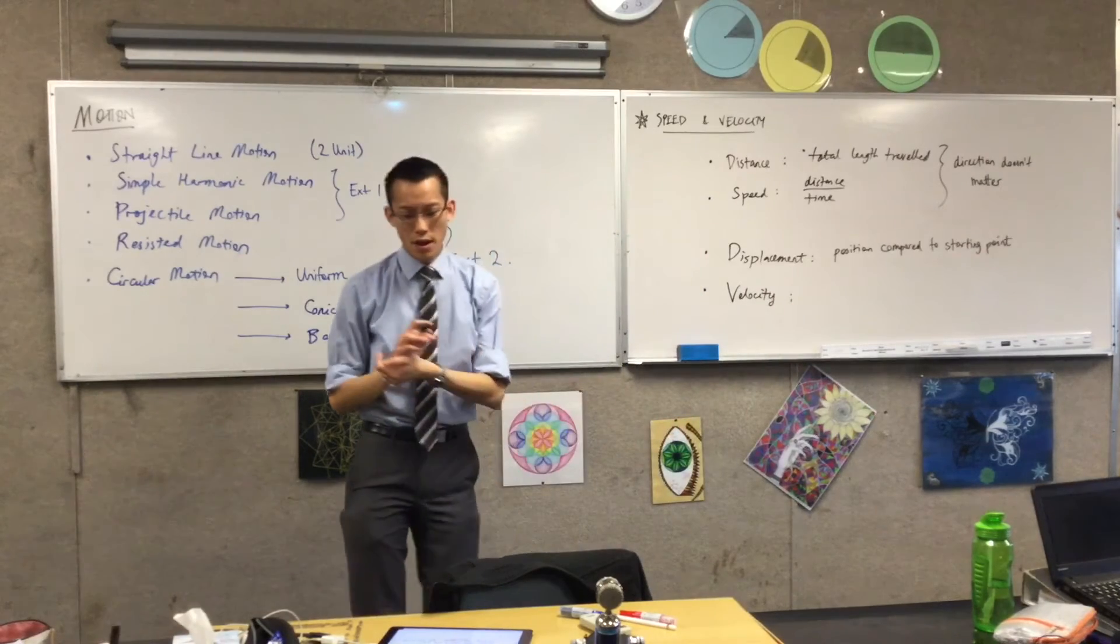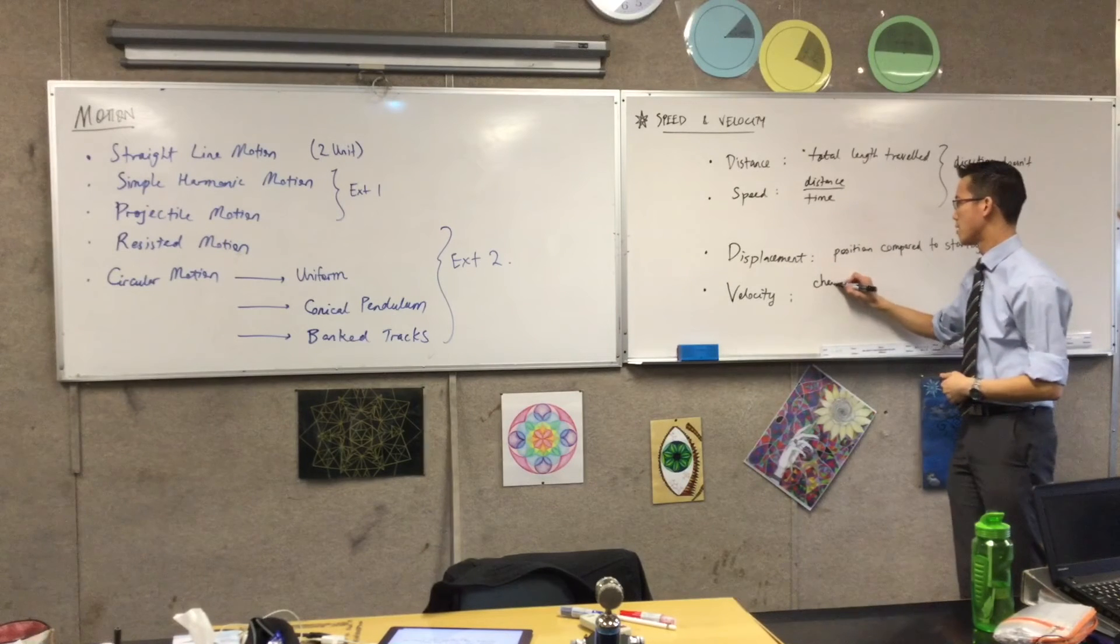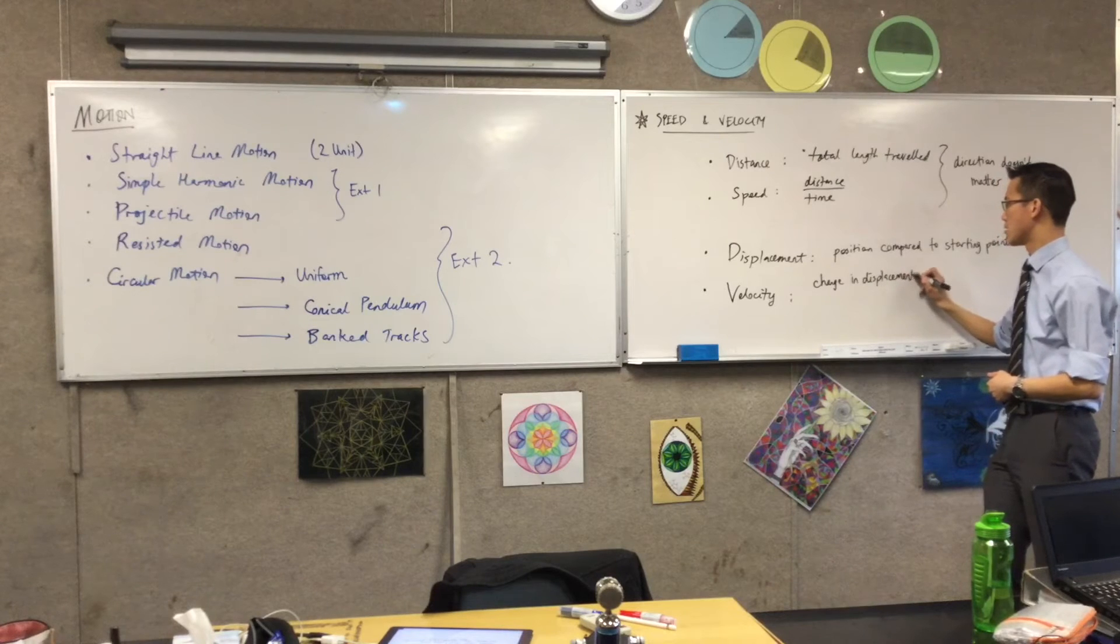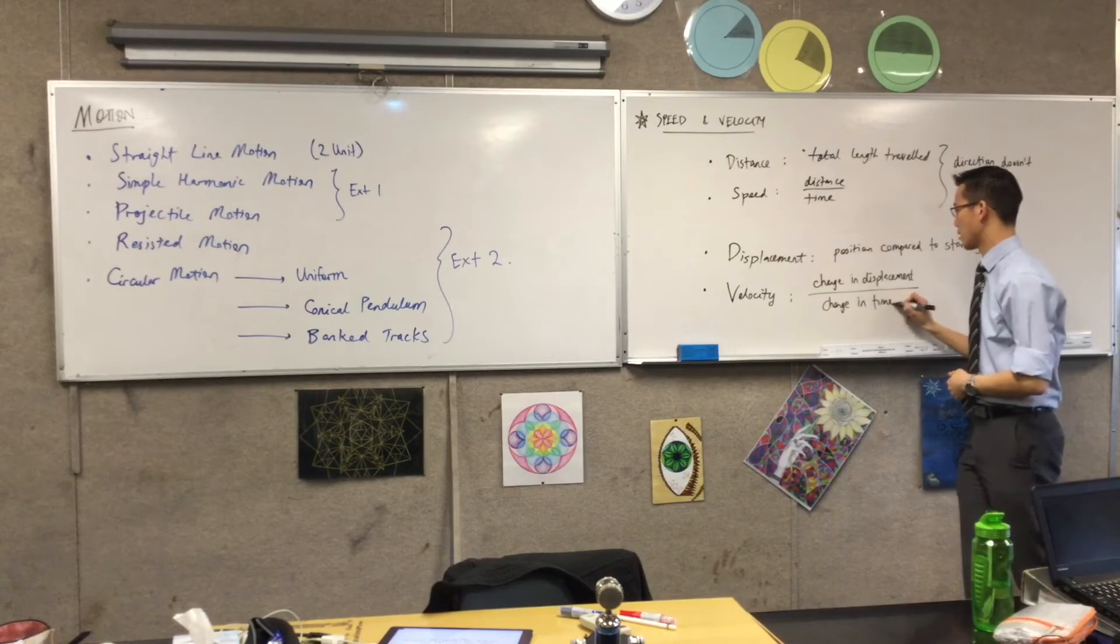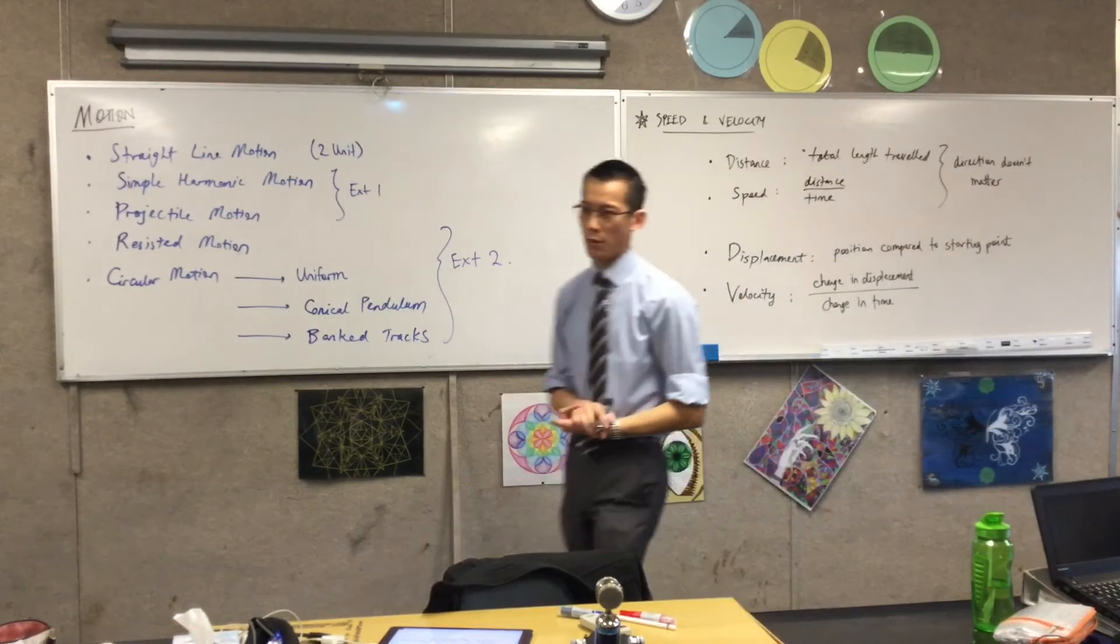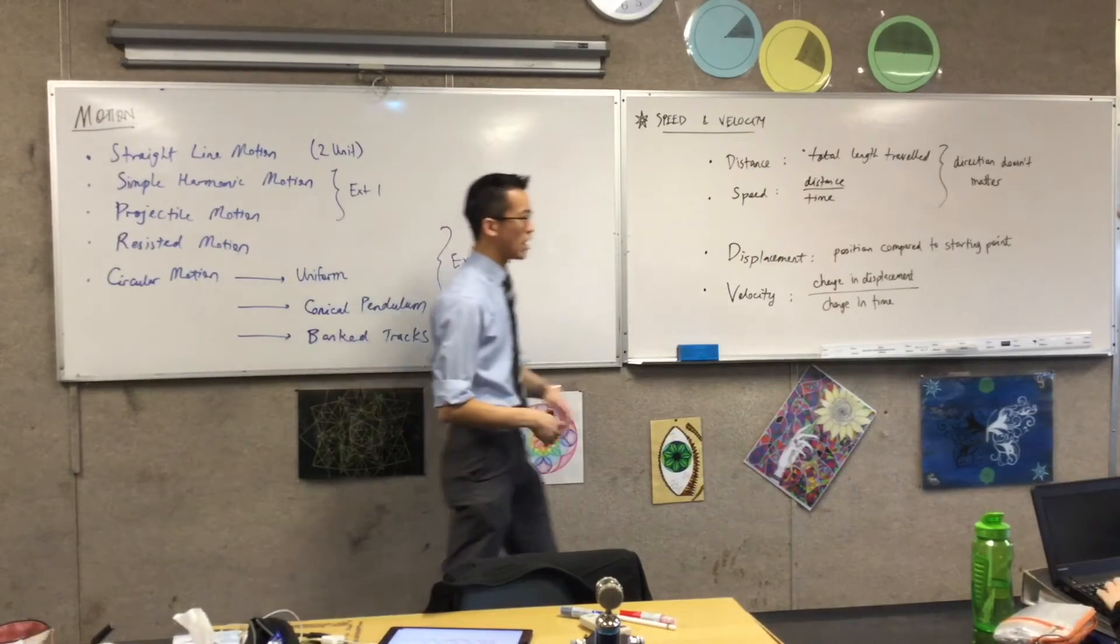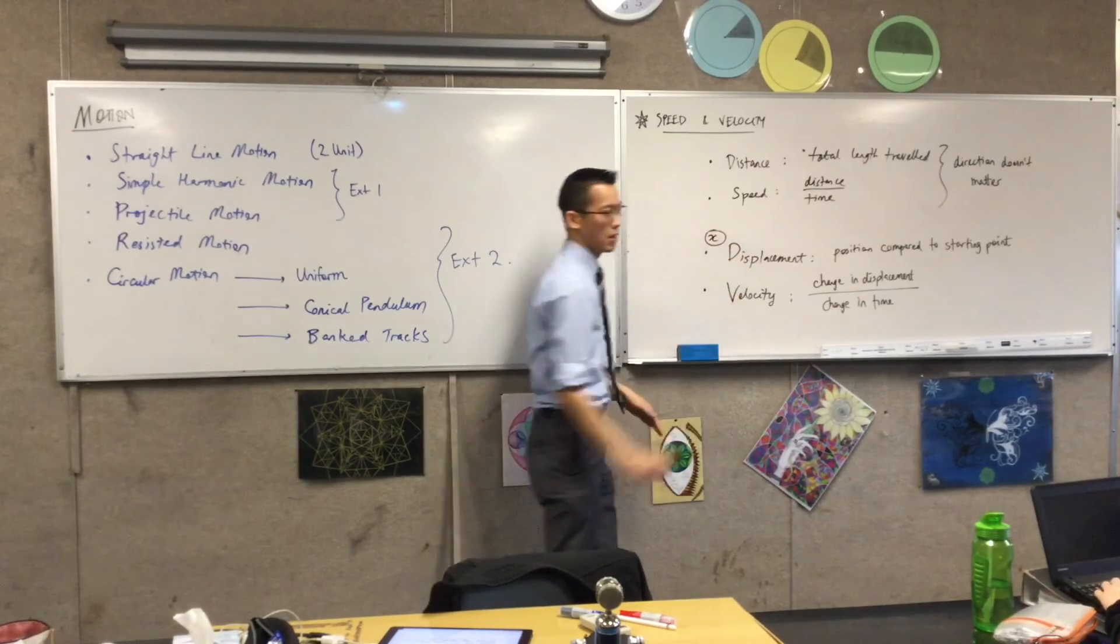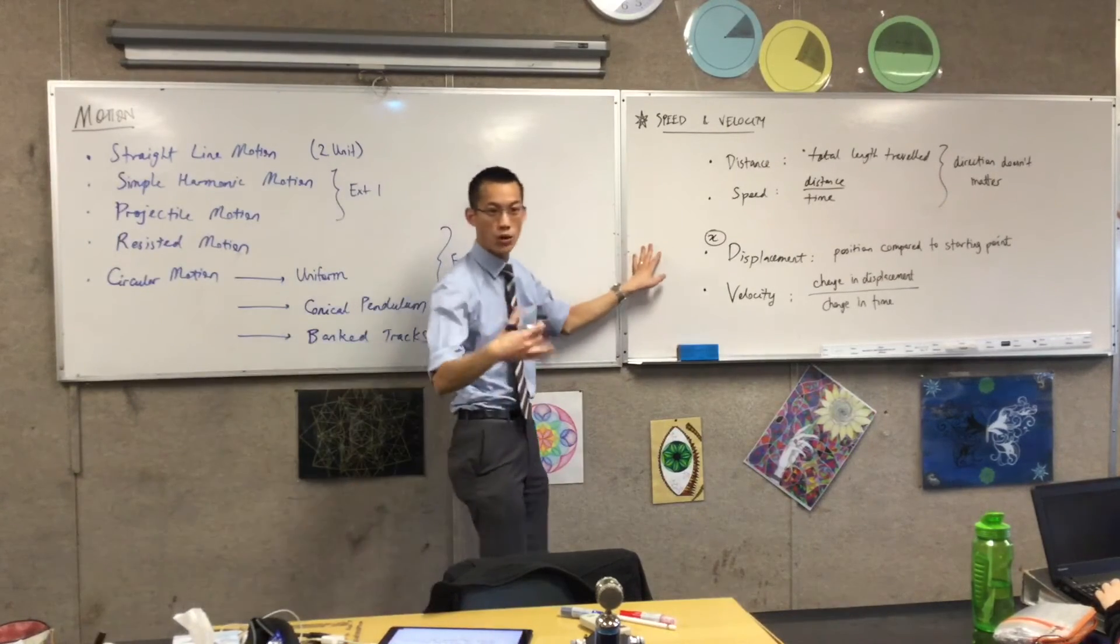So this is about change in displacement over change in time. Now to try and keep things consistent with what we looked at before, distance is about our location. Displacement is about our location. So we tend to give the name to this, we tend to call this our x variable. They don't call it d because d tends to be more mid-distance, and x fits into our coordinate system.